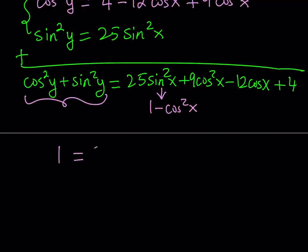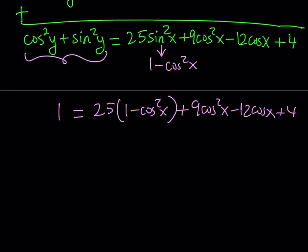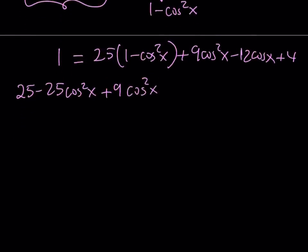So from here, we get 25 times the quantity (1 minus cosine squared x) plus 9 cosine squared x minus 12 cosine x plus 4. Let's go ahead and distribute: 25 minus 25 cosine squared x plus 9 cosine squared x minus 12 cosine x plus 4 is equal to 1.